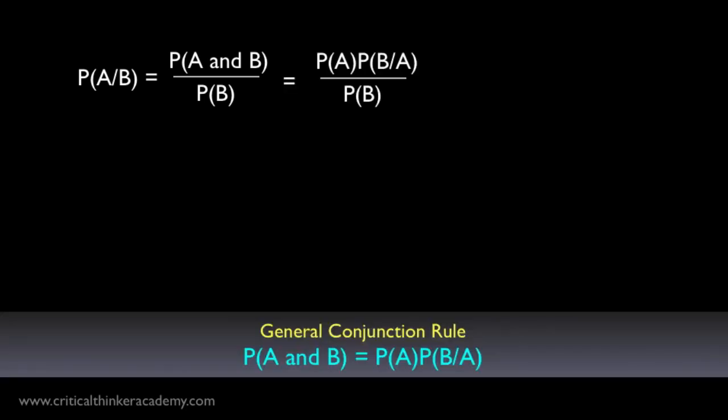Here's the general rule for conditional probability. It serves as the basic definition of conditional probability in probability theory. We can rewrite this formula by swapping out the numerator with the general formula for conjunctions. This is just a rearranged form of the general conditional probability rule, so we're really just swapping around terms here.